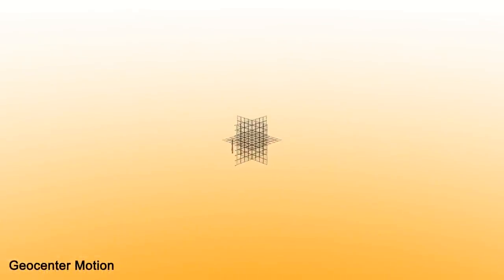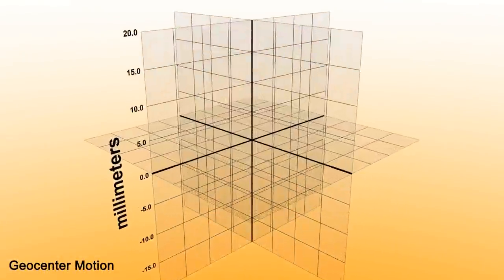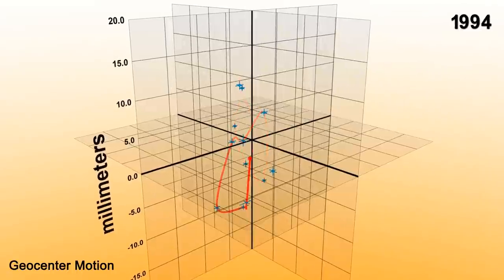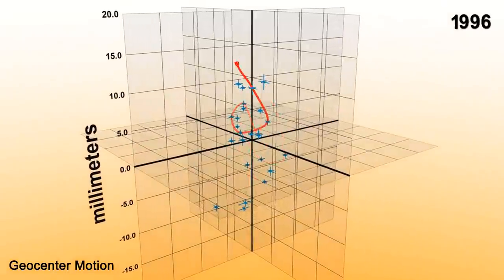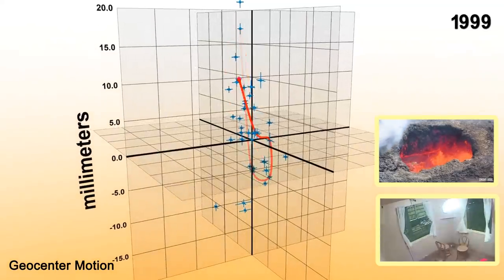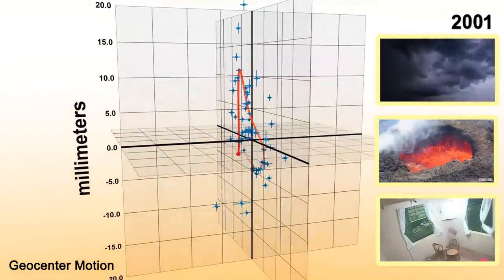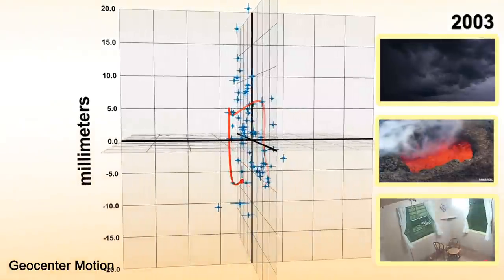One complication is that the center mass of the Earth is constantly changing over time with respect to the Earth's surface. Earthquakes, volcanoes, or even atmospheric pressure changes all impact where exactly the center mass of the Earth is.